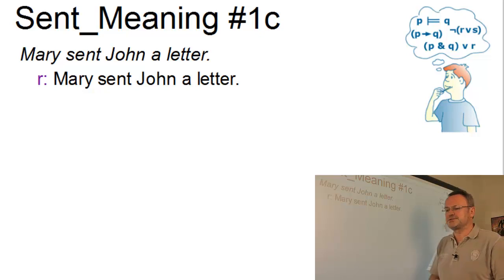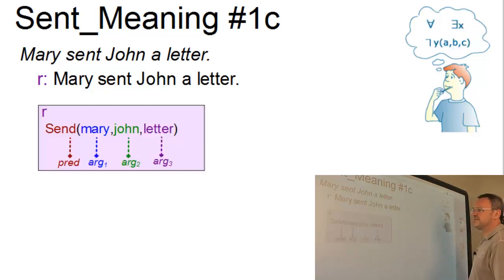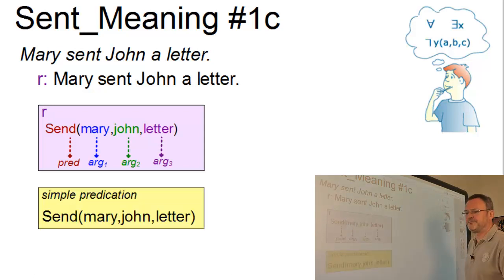Let's call it R this time, where the predicate 'send' denotes a relationship between its three arguments: Mary, John, and letter. Nevertheless, it is still a simple predication with one predicate. In this case we have a three-place predicate.